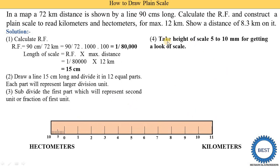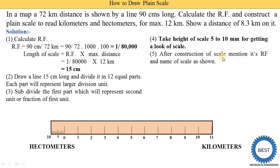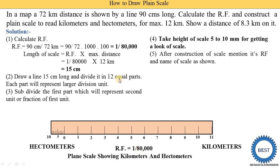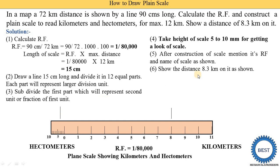After constructing the scale, label the RF (1/80,000) and the name: 'Plane scale showing kilometers and hectometers.' To show 8.3 kilometers: locate the 8-kilometer mark as the first point, then from there count 3 hectometers as the second point. So 8.3 kilometers = 8 kilometers and 3 hectometers, marked accordingly on the scale.